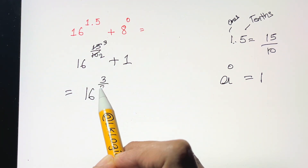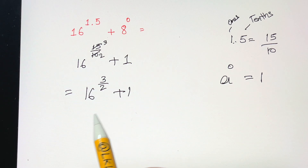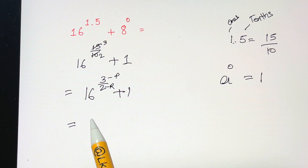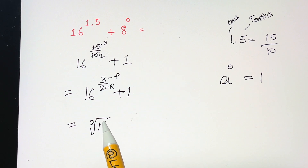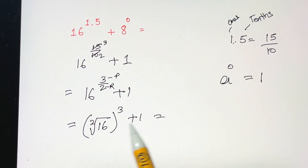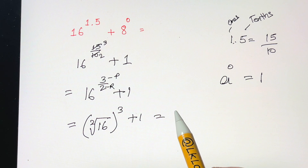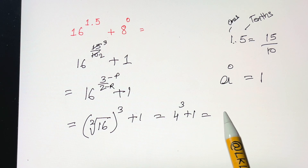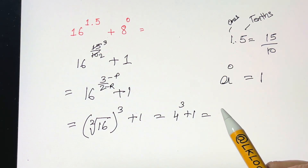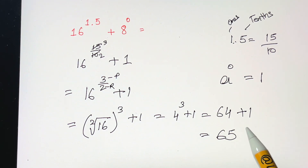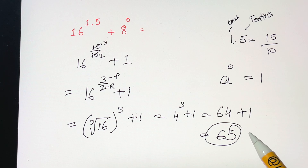So we have 16 to the power of 3/2 plus 1. Here 3 is the power and 2 is the root, so we write the square root of 16 to the power of 3, plus 1. Square root of 16 is 4, so we have 4 cubed plus 1. 4 cubed is 4 times 4 times 4, which is 64. 64 plus 1 equals 65. That's your answer!